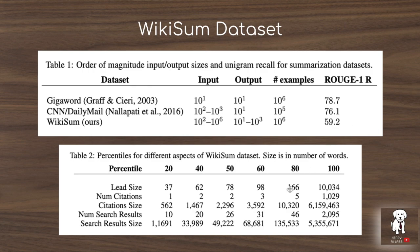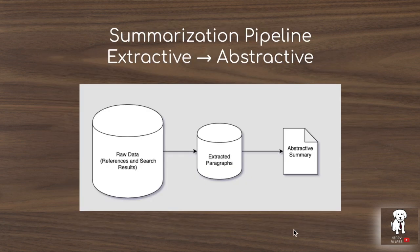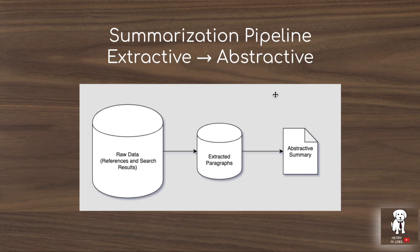Table 2 shows massive variance in the Wikisum dataset. Many Wikipedia entries have very few references, which is why the dataset is supplemented with Google search results. The input space of all referenced articles plus the top 10 Google search results is too large for end-to-end abstractive summarization. So they first use a middleman extractive summarization pipeline using TF-IDF or a cheating method to extract the paragraphs with the most overlap with the target summary, filtering the data to make it tractable for abstractive summarization.